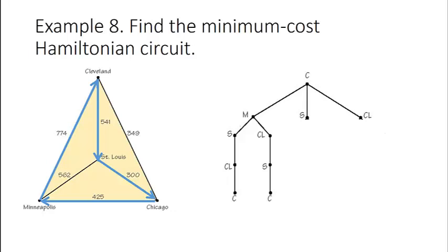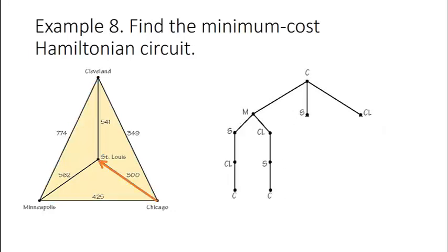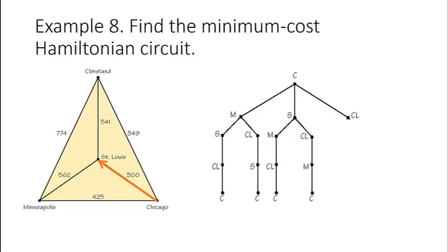What if instead we decide to travel to St. Louis first? From St. Louis we may choose to next go to Minneapolis, then we would have to go to Cleveland before returning home to Chicago. Or from St. Louis we can go to Cleveland, then we have to go to Minneapolis before returning home. Those are the two possibilities going from Chicago to St. Louis first.